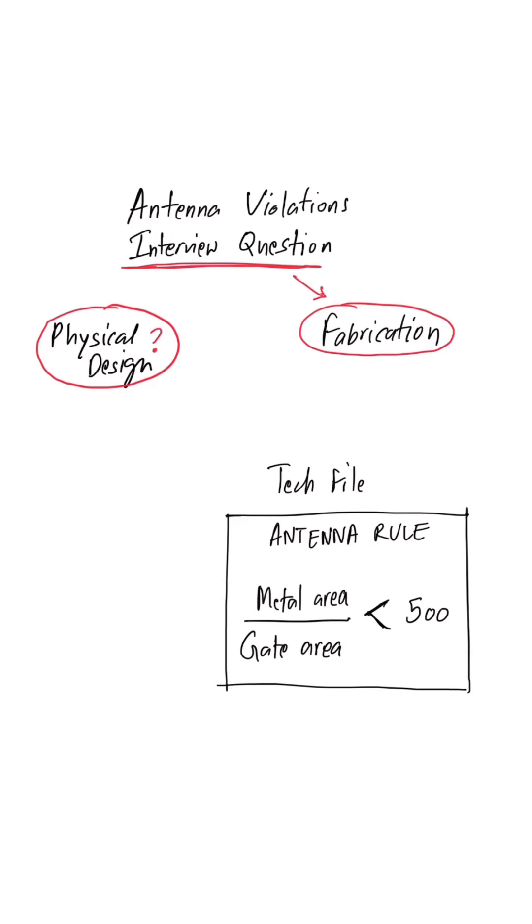The answer is that for any particular technology node, the foundry provides us with a tech file which contains the antenna rules. An antenna rule is quite easy to read. It defines that the metal area to gate area ratio should be less than a particular number.